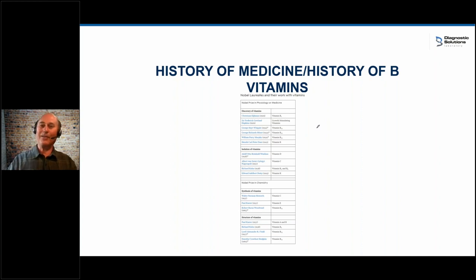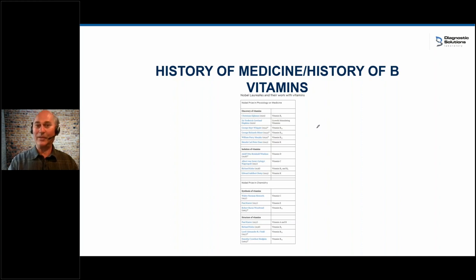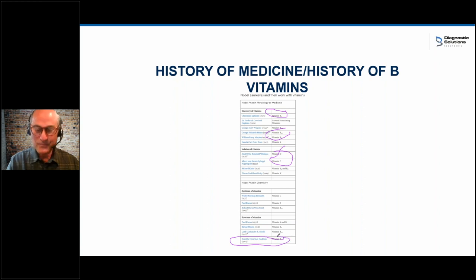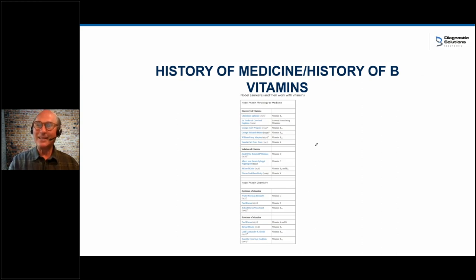I thought, how important really are B vitamins? The Nobel Prize Committee gives out the Nobel Prize in Medicine every year — that's a nice way to track how important things are scientifically. In 1929, a Nobel Prize was awarded for B1, and the B vitamin Nobel Prizes kept coming — they threw in one on vitamin D, one on vitamin C — all the way through to 1964. That means between 1929 and 1964, the worldwide scientific community many times decided that a vitamin was the most important discovery in clinical medicine and science, and the majority were B vitamins.